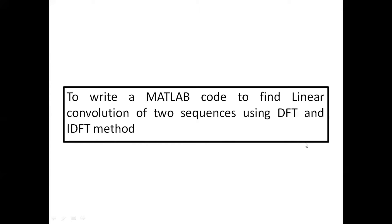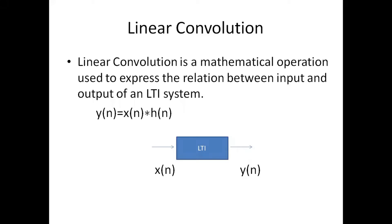In this session we will learn how to write the MATLAB code to find the linear convolution of two sequences using DFT and IDFT method. We know that convolution uses the mathematical tool to combine two signals to form the third signal. The significance of convolution is to find the response of any system. The linear convolution is the mathematical operation used to express the relation between the input and the output of an LTI system, the linear time invariant system.